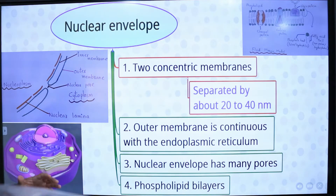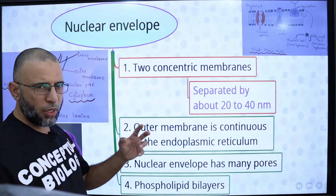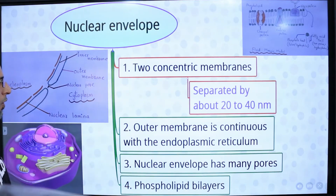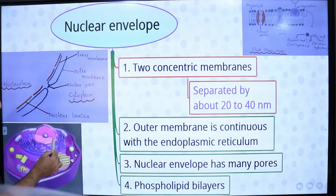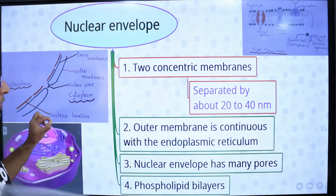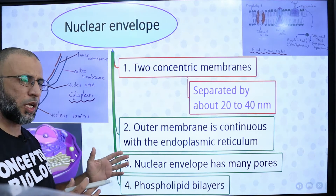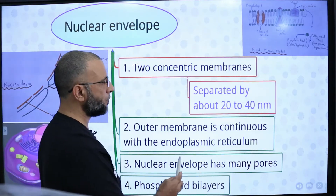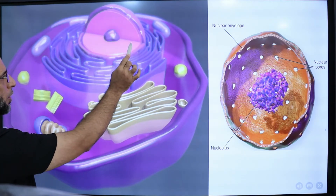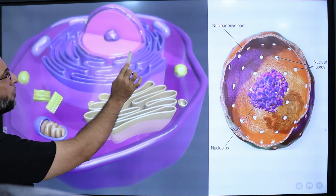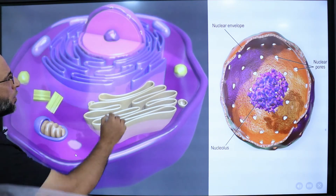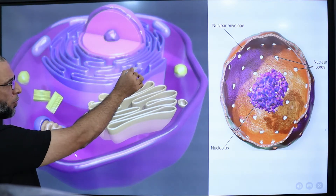The nuclear envelope: the nucleus is bounded by two membranes, and these two membranes are separated by 20 to 40 nanometers. The outer nuclear membrane is continuous with the endoplasmic reticulum, and the nuclear envelope has many pores. The composition of the nuclear membrane is the same as the cell membrane — that is, it is composed of a phospholipid bilayer.